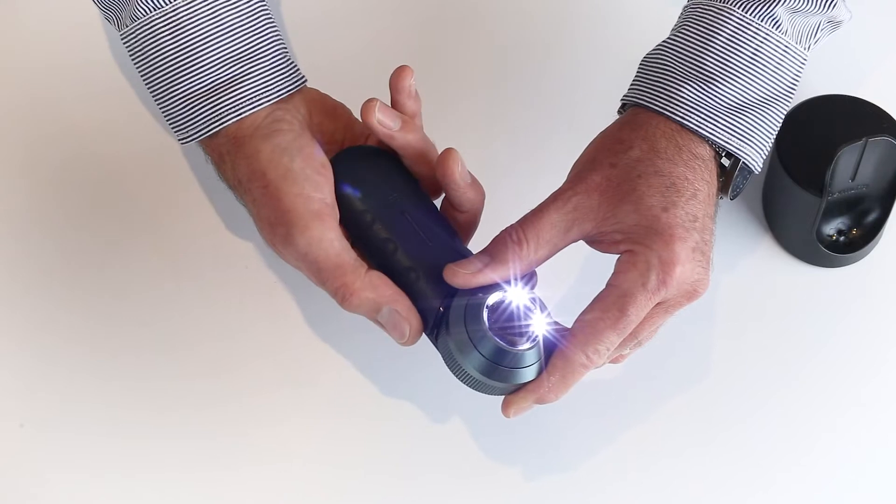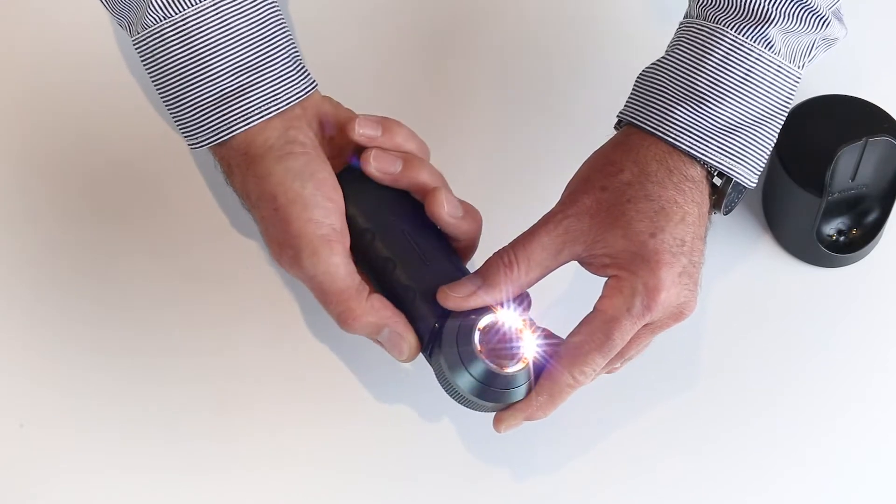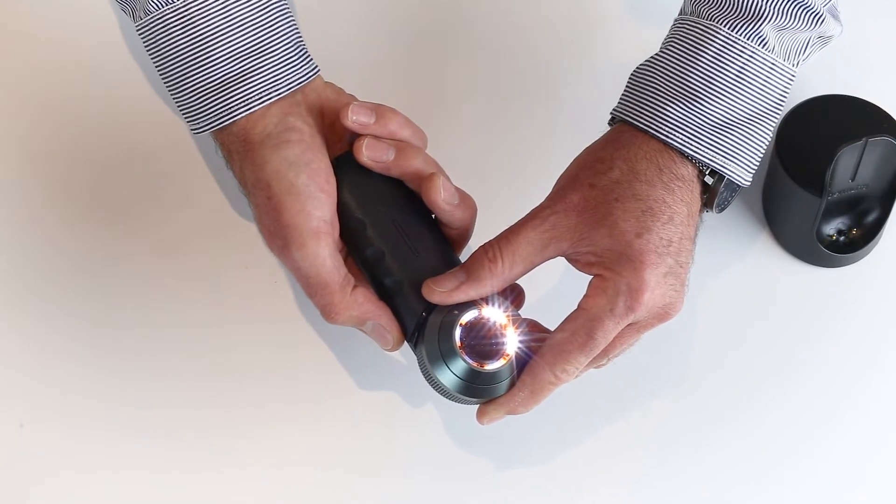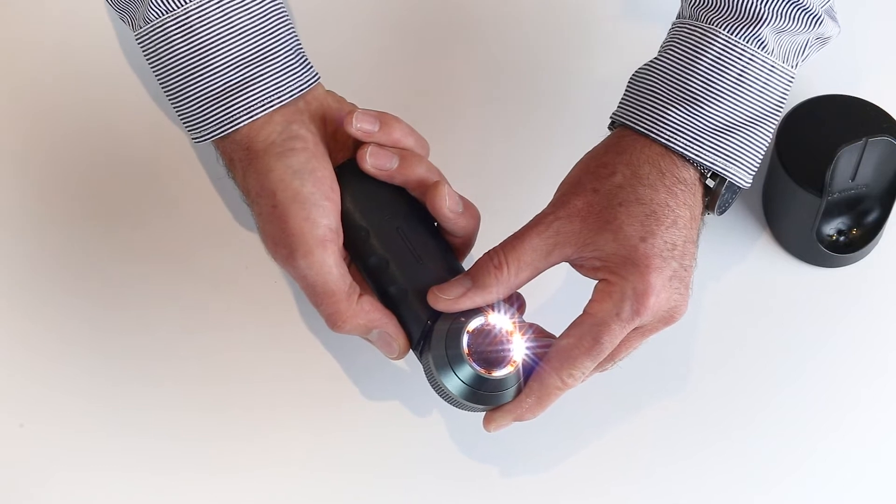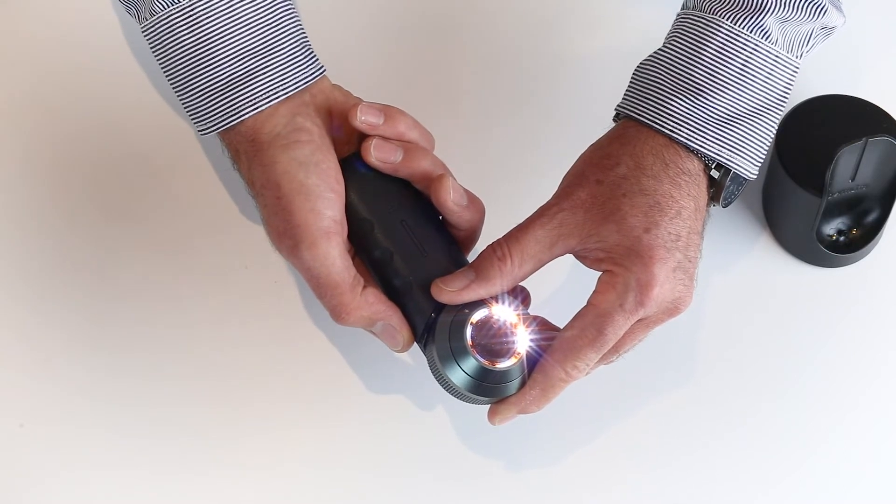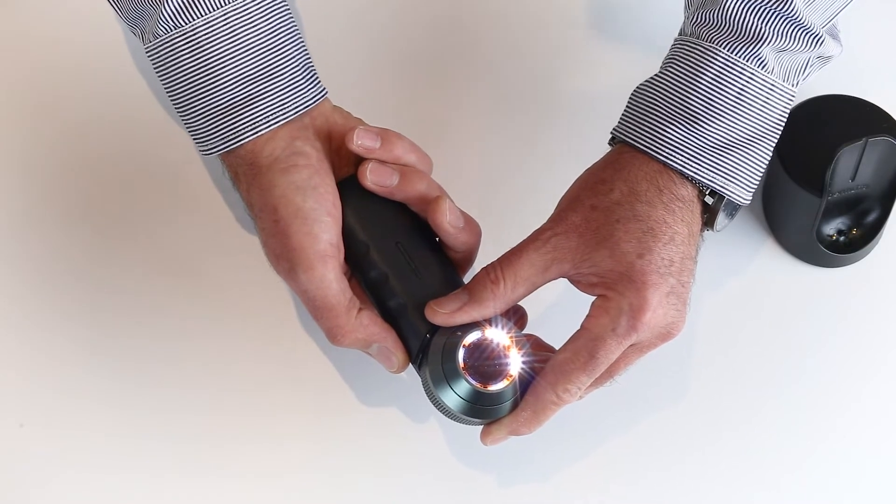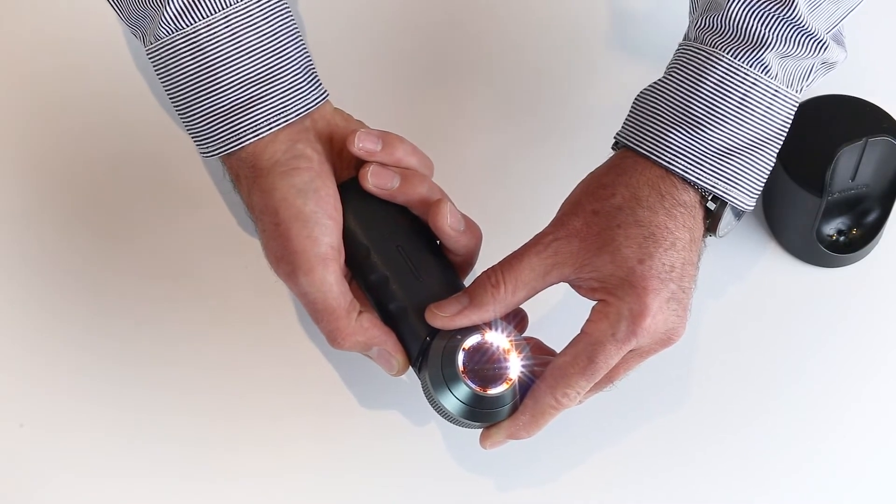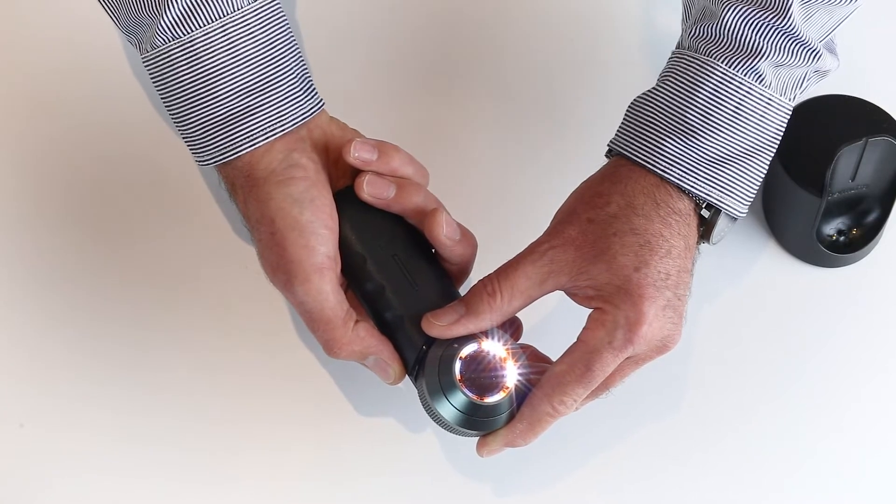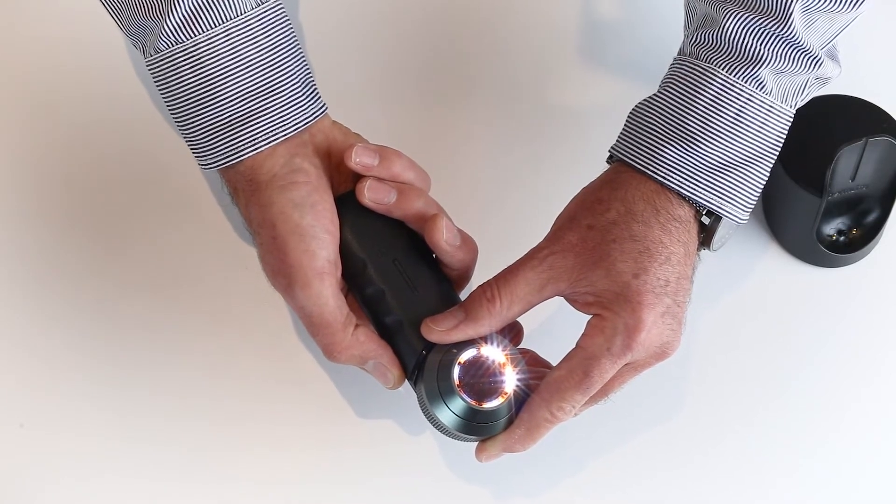On the other side of the handle, where my thumb is, this turns on what we call pigment boost. You can see the orange LEDs. The orange LEDs put a natural skin tone back into the picture that sometimes the white LEDs can wash out. So this gives you a more natural light. This has nothing to do with actual diagnosing—it's really just a personal preference.